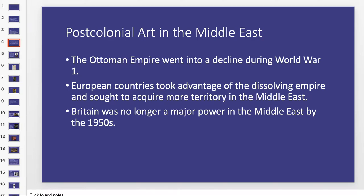Our first examples are post-colonial art from the Middle East, and there'll be a video associated with this in our module as well. The Ottoman Empire went into a decline during World War I, and at this time European countries took advantage of the dissolving empire and sought to acquire more territory in the Middle East — they saw the empire was weakening and thought it was time to grab that land. Britain was no longer a major power in the Middle East by the 1950s. They tried to spread the British Empire out that way, but because of World War I and World War II, they couldn't really hold on to it.